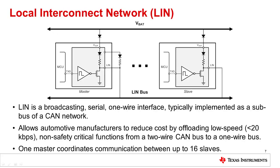LIN is a broadcast, serial, one-wire interface, which is typically implemented as a subbus of a CAN network. It allows automotive manufacturers to reduce cost by offloading low-speed, non-safety critical functions from a two-wire CAN bus to a one-wire bus. One master coordinates communication between up to 16 slave devices on the network.